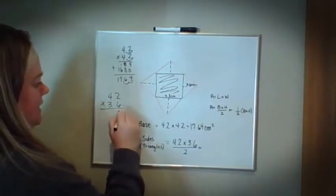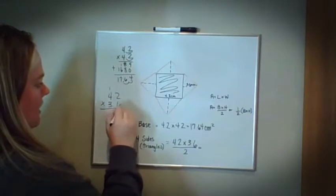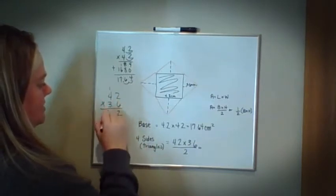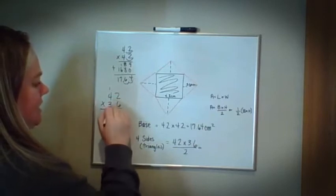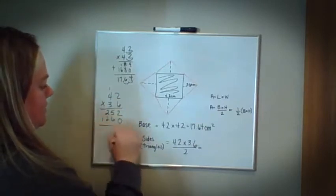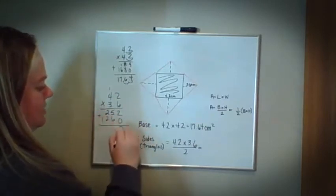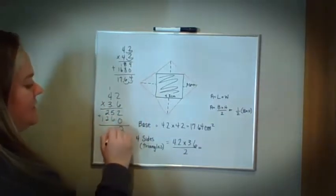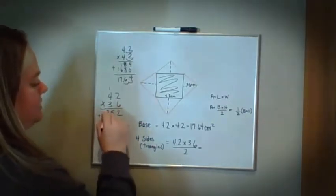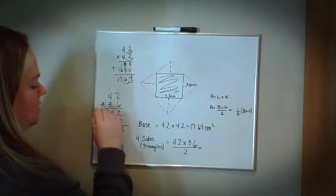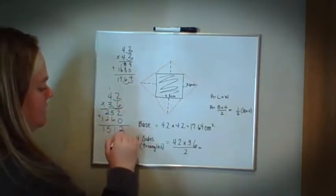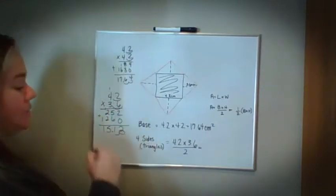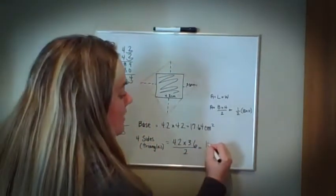6 times 2 is 12. Carry the one. 6 times 4 is 24 plus 1 is 25. Placeholder. 3 times 2 is 6. 3 times 4 is 12. Add these together. 2 plus 0 is 2. 6 plus 5 is 11. 2 plus 2 is 4 plus 1 is 5. 1 plus 0 is 1. 2 decimal places, 2 decimal places. So 15.12.